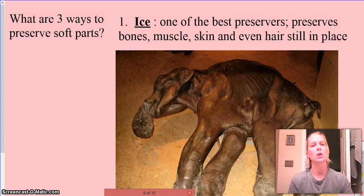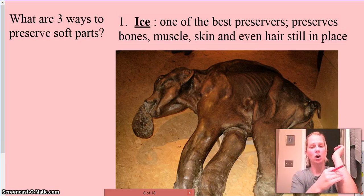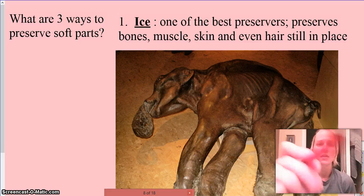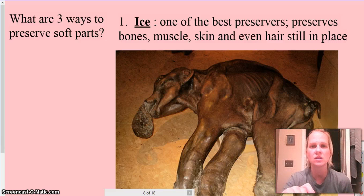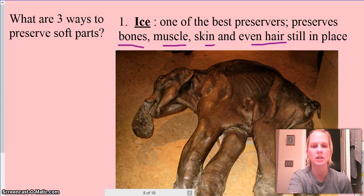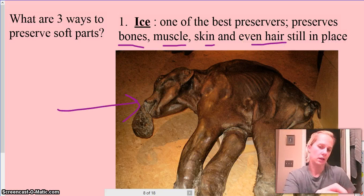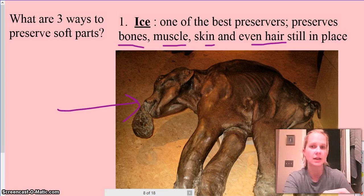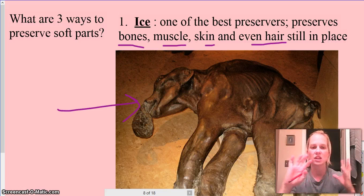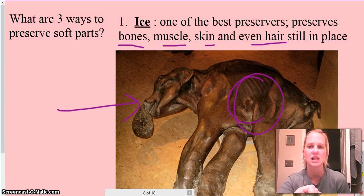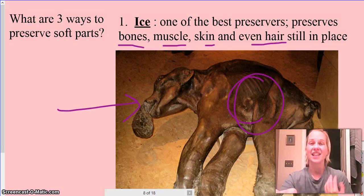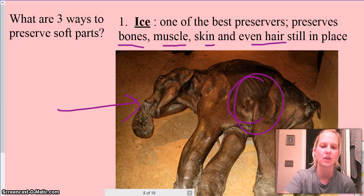When thinking about original remains, there are three ways to preserve the soft parts. The best way to preserve is ice — ice is going to preserve all the bones, the muscle, the skin, even the hair. We can see this woolly mammoth baby right here. It died, and this is preserved hair, teeth, even the tummy contents showing what its last meal was, still intact. Think of how much information that's going to provide.